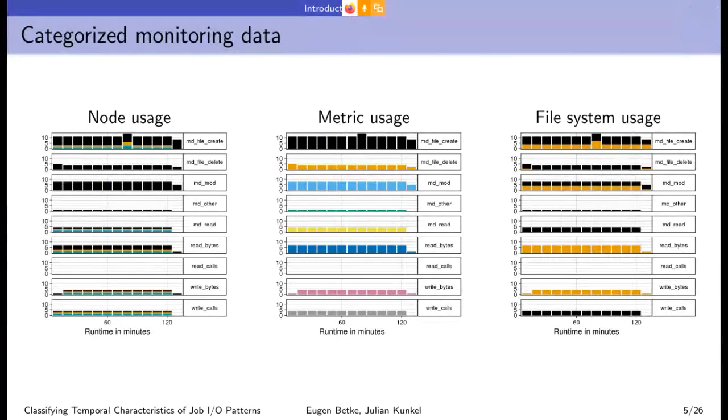So here's an example of categorized monitoring data. This representation has many advantages. Units disappeared completely. We do not have megabytes per second or operations per second anymore, and you can now aggregate data in many different ways that was not possible before. So the data size shrunk from several gigabytes to a few megabytes so that we can share it with you, and data processing can be done much faster.